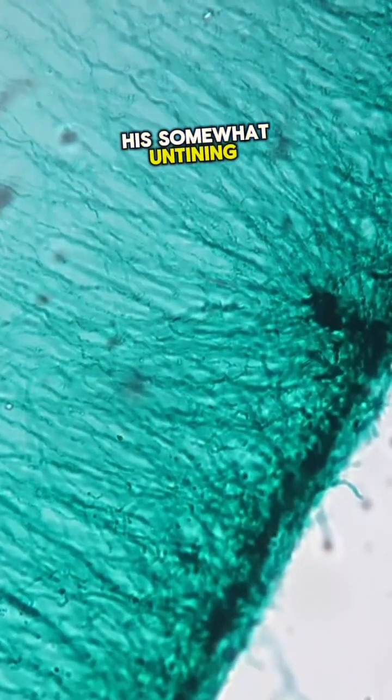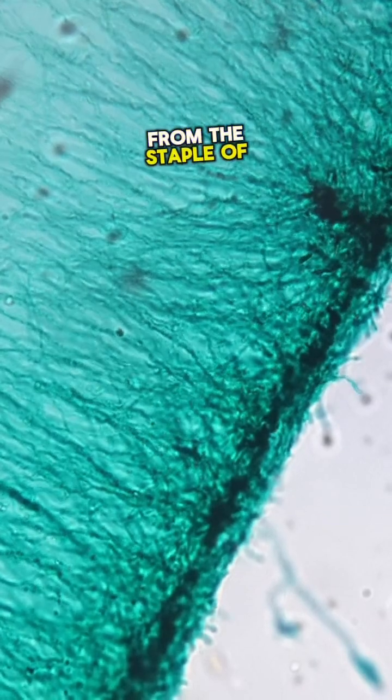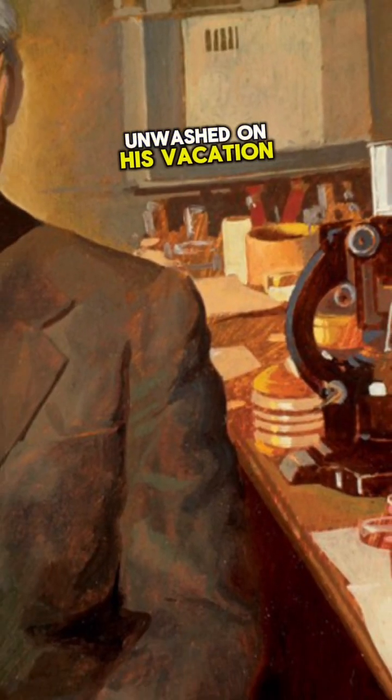Fleming was known for his somewhat untidy lab practices. He had been experimenting with the bacterium Staphylococcus aureus and had left several petri dishes unwashed before his vacation.